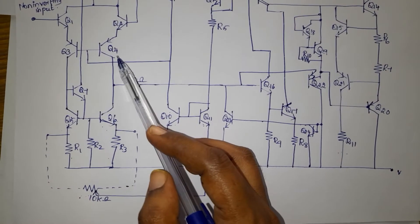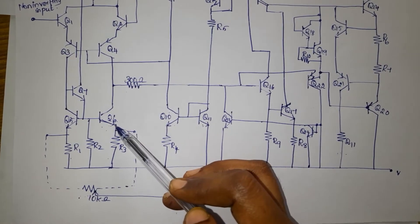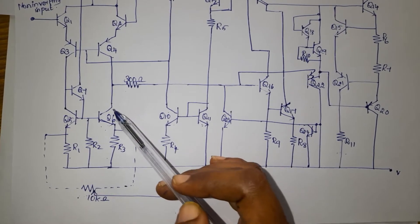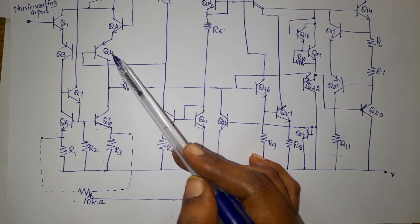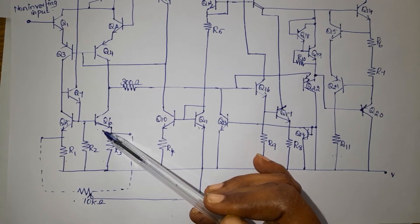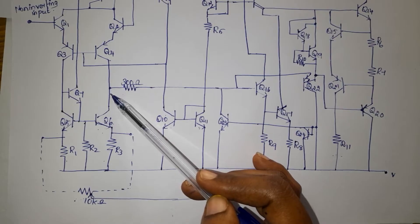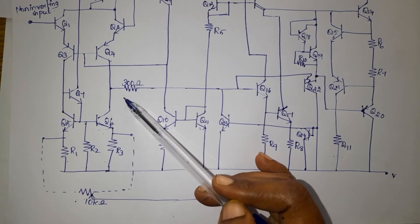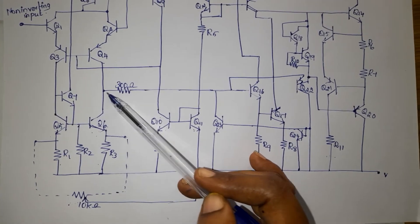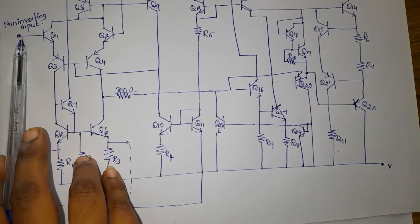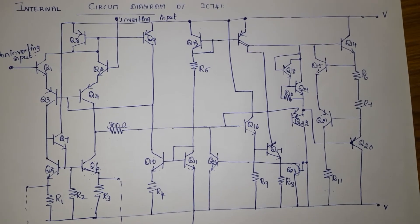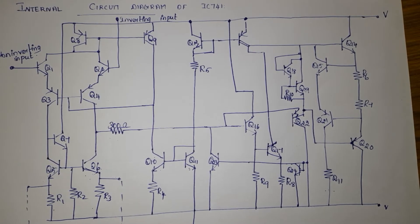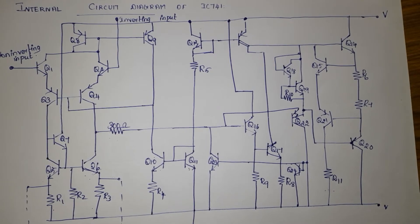Transistors Q4 and Q6 form the complementary symmetry amplifier as the output of the first stage. The output of the first stage is taken from the junction of Q4 and Q6, and this output is proportional to the differential of the input signal — the difference of the two input signals (non-inverting and inverting). This output is given to the next stage. The intermediate stage is part of the input stage.